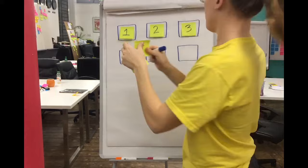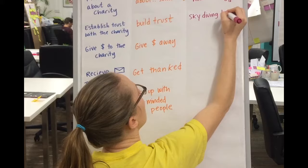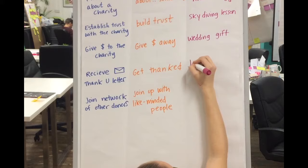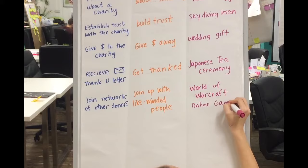Step four: turn each simplified interaction into a totally new thing. Go crazy and broad — extremes are good. 'Find out about something': how about discovering a new band you love? 'Build trust': maybe a skydiving lesson — that's a pretty good example of trust building. 'Give money away': a wedding gift comes to mind. 'Get thanked': how about a Japanese tea ceremony — an example of one person expressing a ton of reverence and appreciation. 'Join like-minded people': how about multiplayer online gaming like World of Warcraft — people coming together who are insanely passionate about a cause. That one's nice and weird.